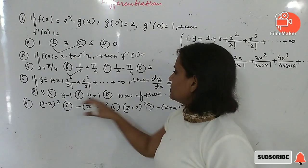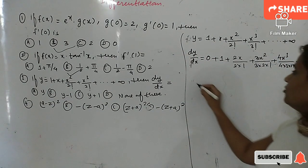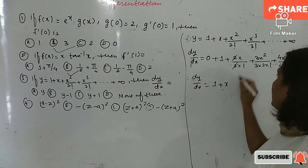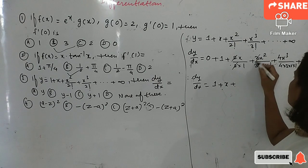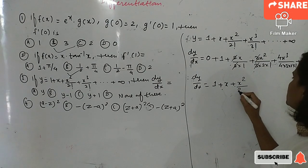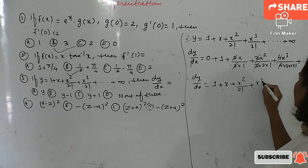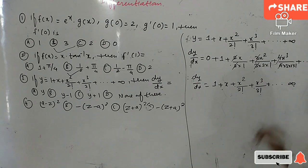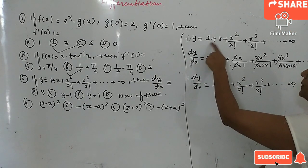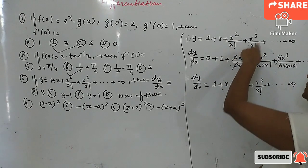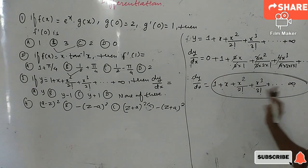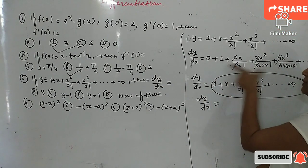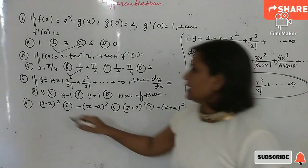Since all options are given in terms of y, we convert the result. After differentiation, the 2s cancel, 3s cancel, 4s cancel, and so on, giving: dy/dx = 0 + 1 + x + x²/2! + x³/3! + ... which equals 0 plus the entire y expression. So dy/dx = y, and the correct option is A.